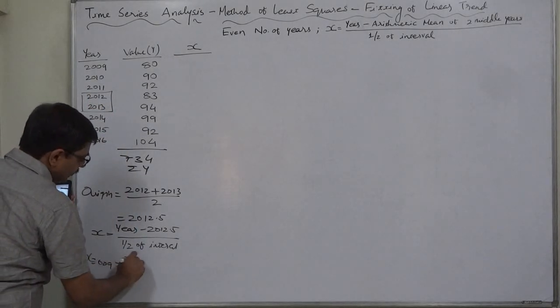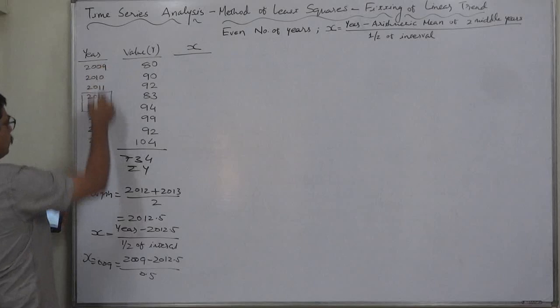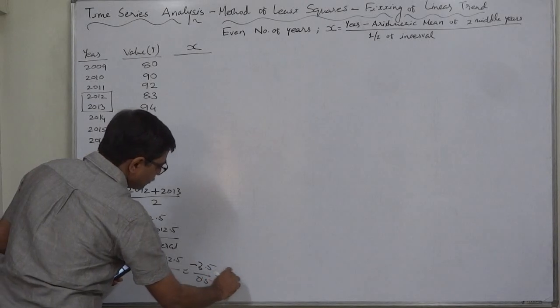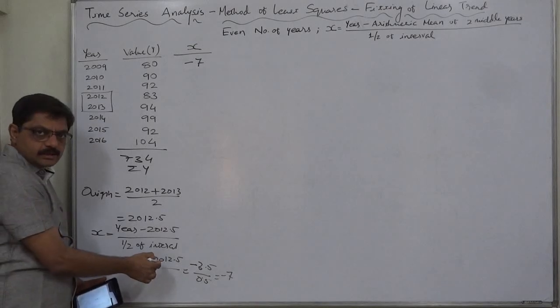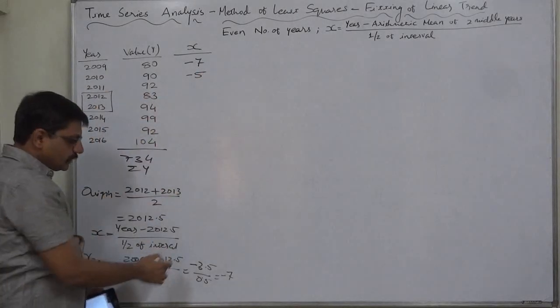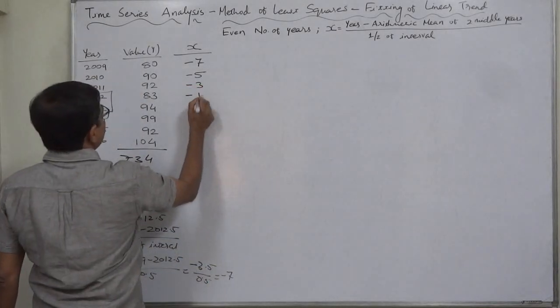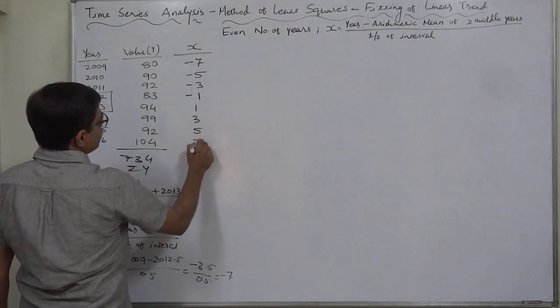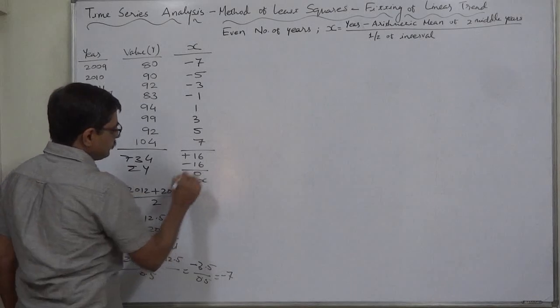Let's find X for the year 2009. It will be 2009 minus 2012.5 upon half interval, means 0.5, because interval is of one year only. So it will be minus 3.5 divided by 0.5, so it will be minus 7. Similarly, 2010 minus 2012.5 will be minus 2.5 divided by 0.5, means minus 5. 2011 minus 2012.5, minus 1.5 divided by 0.5 is minus 3. Similarly minus 1, here it will be 1, 3, 5, and 7. Positive 16, negative 16. Sigma X comes to 0. It must be 0.